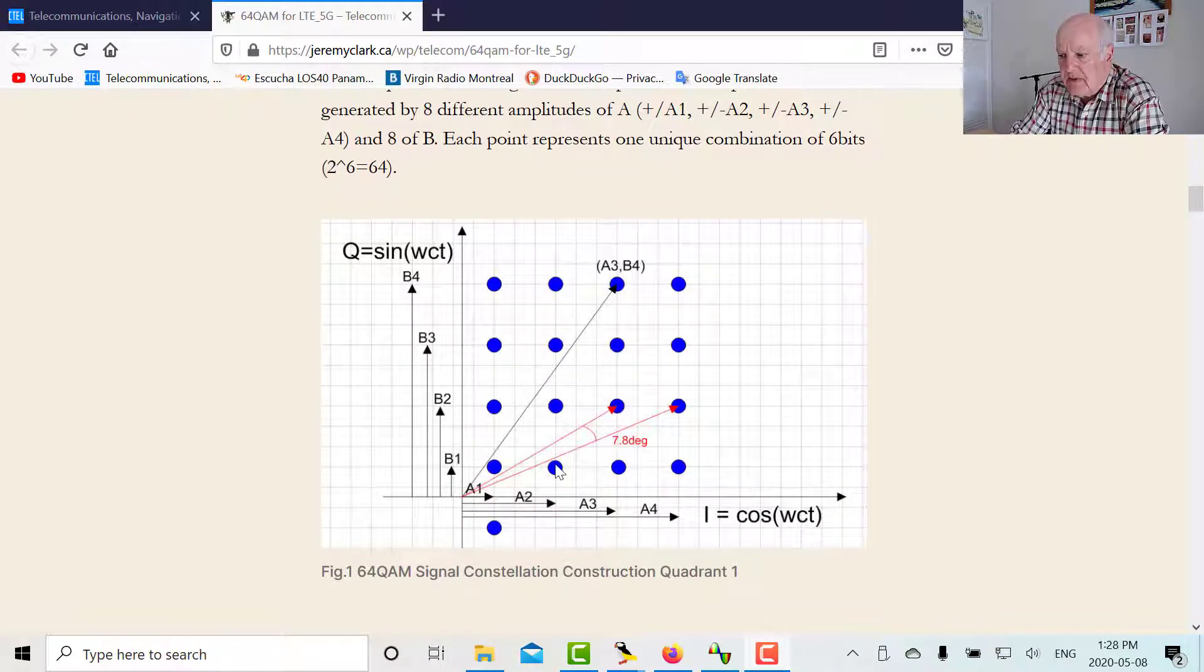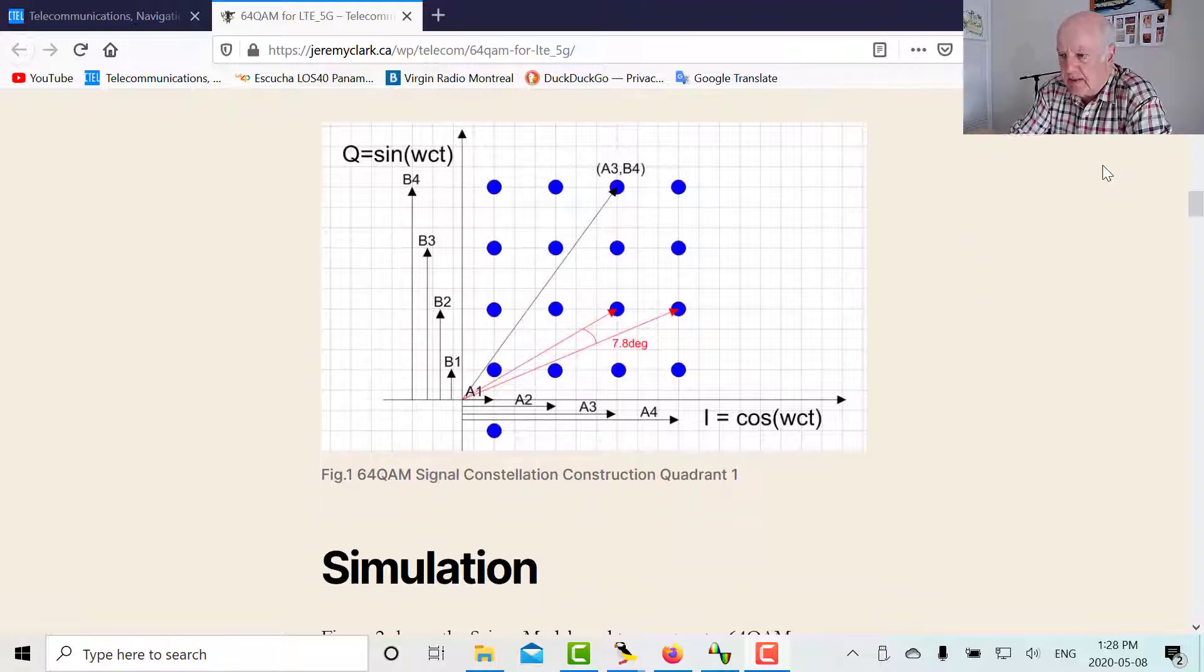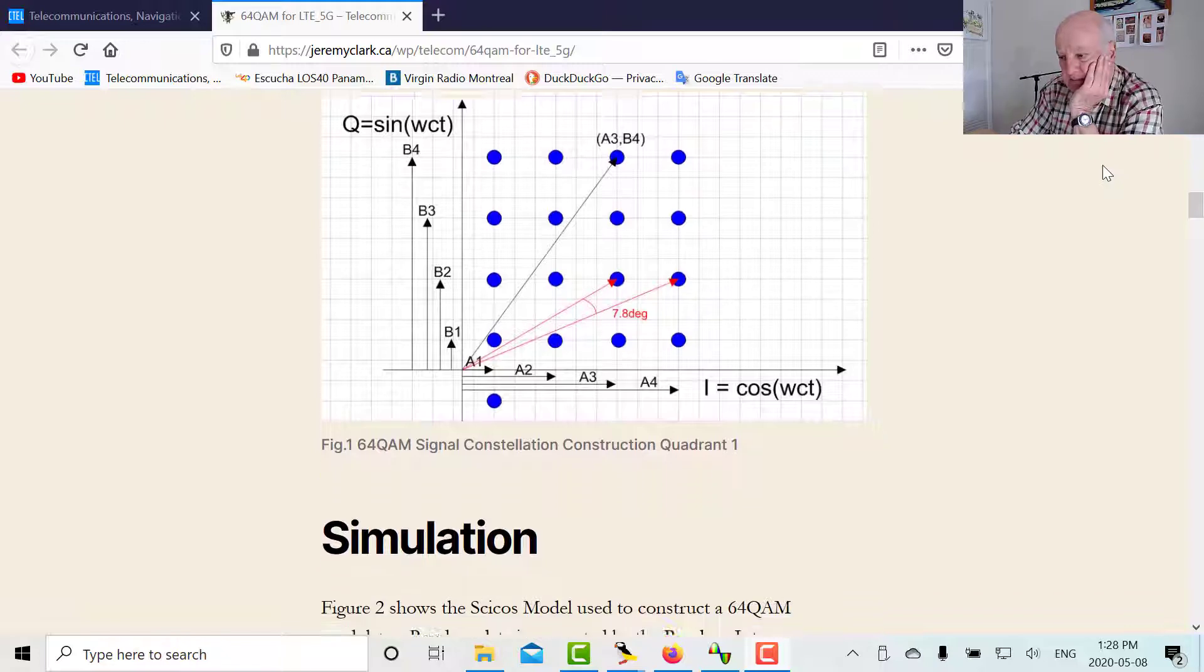So there's eight different possibilities for amplitude for I, and there's eight different possibilities for amplitude for Q in this kind of way of constructing QAM. There's different ways that you can build a QAM structure, but this is the one I'm using.